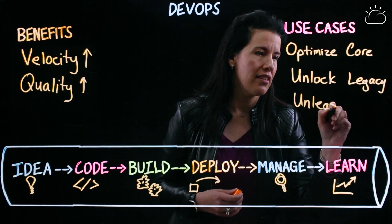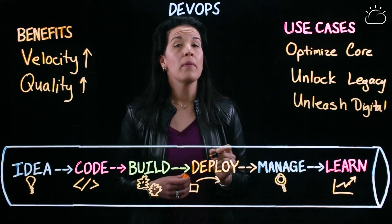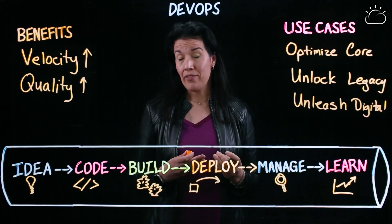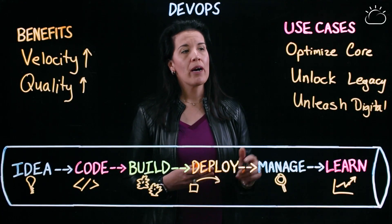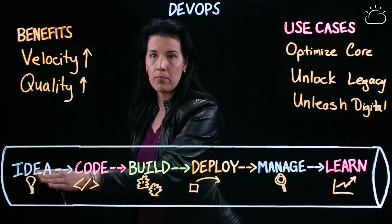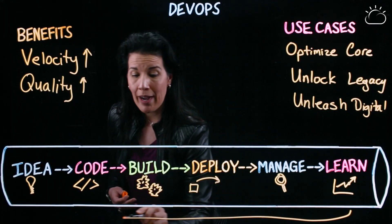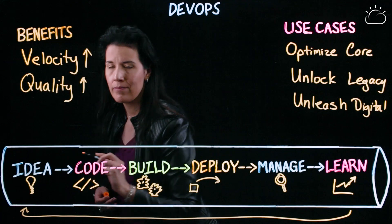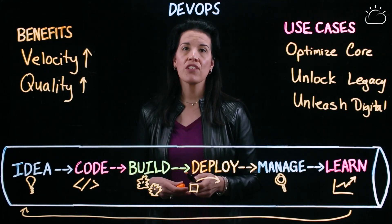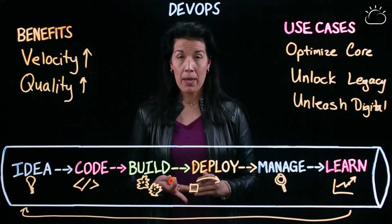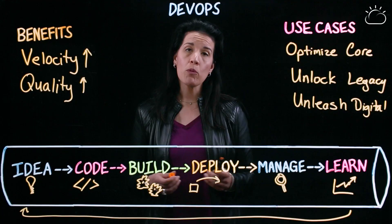And then the last use case: unleashing the digital. With the maturation of cloud-native apps, 12-factor, Kubernetes, and Docker, we're all about continuous delivery from ideation all the way through to continuous improvement and rounding back to the beginning. What we learn that we can do better, we feed back into the pipeline. This is all about modern applications delivered by modern teams on modern platforms.